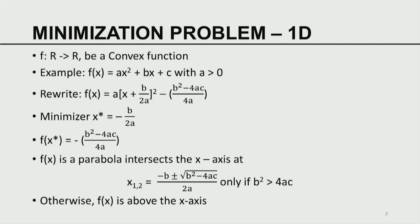With that as a background, I would like to state the minimization problem in one dimension. Let f be a convex function from R to R — a scalar-valued function of a scalar. An example is f(x) = Ax² + Bx + C with A > 0. We can rewrite this by completing the square as A(x + B/2A)² − (B² − 4AC)/4A. The second term does not depend on x, so by choosing x = −B/2A we annihilate the first term. Therefore x* = −B/2A is the minimizer, and the minimum value is f(x*) = −(B² − 4AC)/4A.